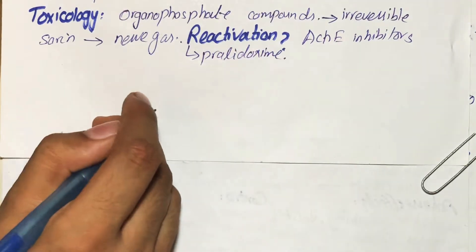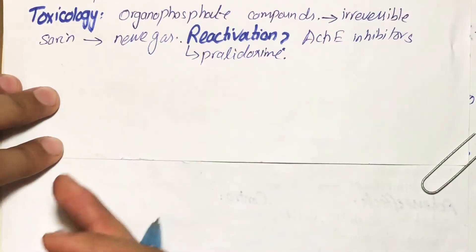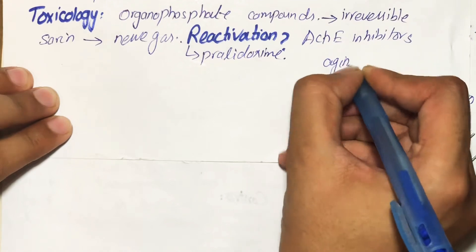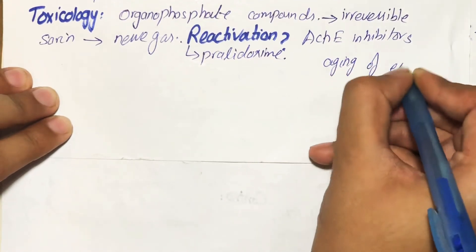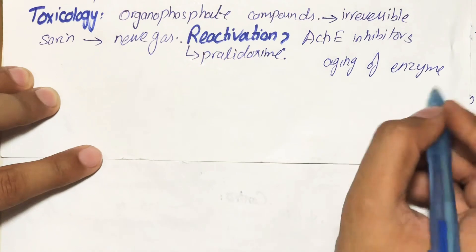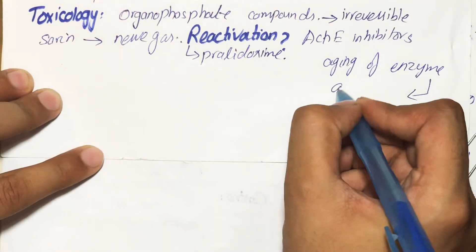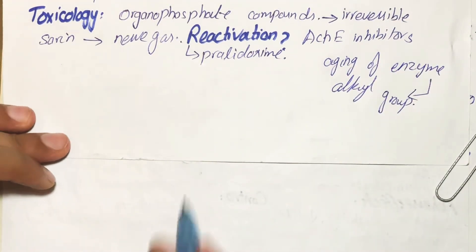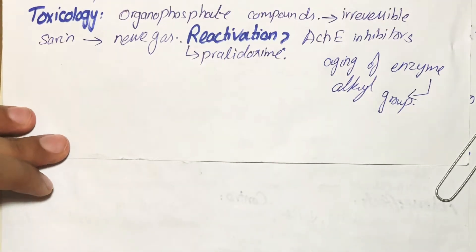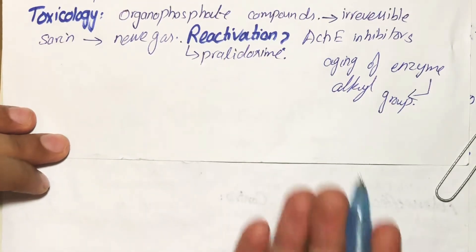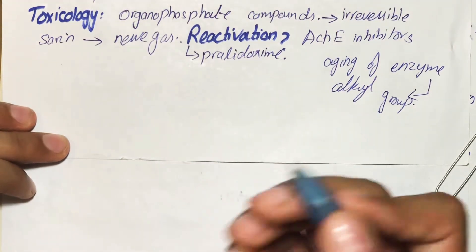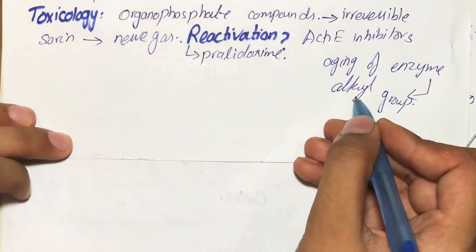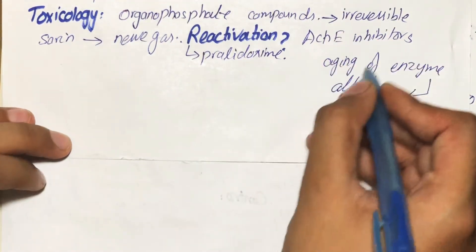Pralidoxime can reactivate the inhibited acetylcholinesterase if it is given before the aging of the enzyme. Aging of the enzyme occurs when the enzyme releases an alkyl group. At this stage, even pralidoxime cannot reactivate the enzyme, so pralidoxime is only effective if given before the enzyme reaches its aging state.